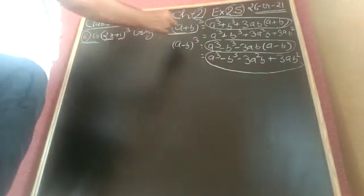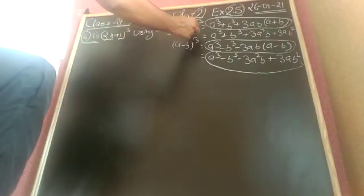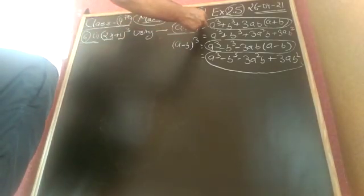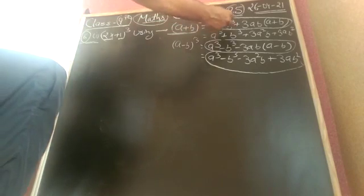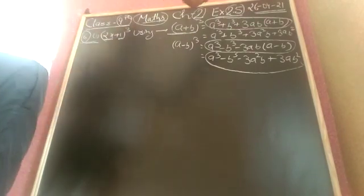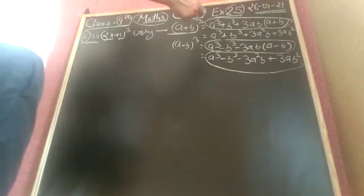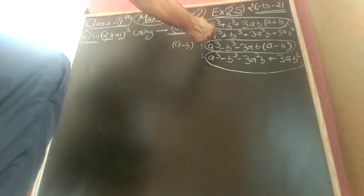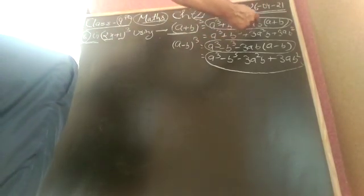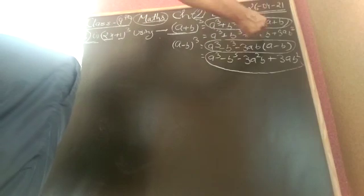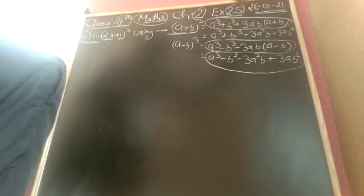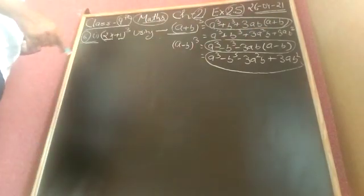We are using the identity A plus B whole cube, which equals A cube plus B cube plus 3AB into A plus B. If we expand this, we get A cube plus B cube plus 3A squared B plus 3AB squared. We will use both identities.